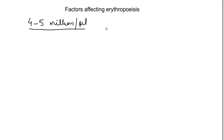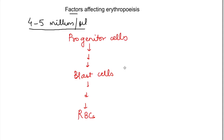So there are some factors that maintain the RBC count. The RBC production stages we have seen in another video — I have given the link below, you can check it. But here we will see it in short. These factors that are regulated by erythropoiesis act in different stages.